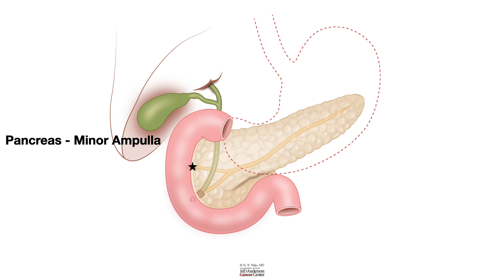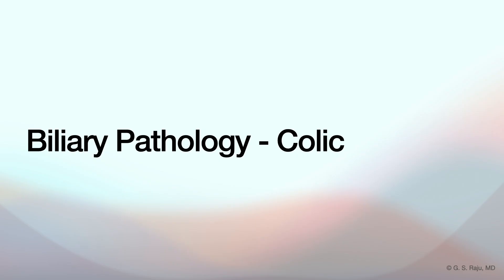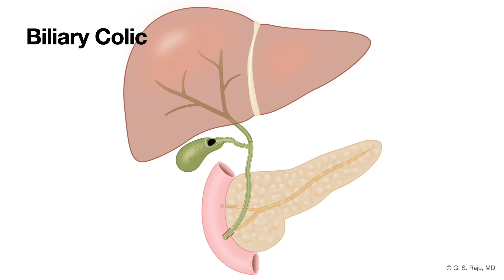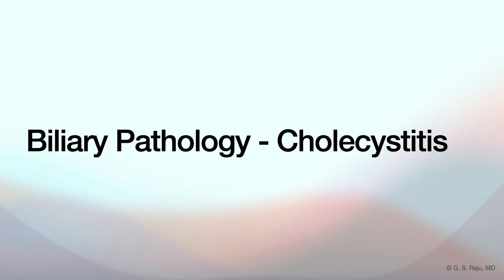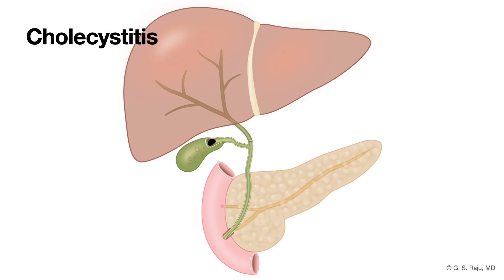Now let's talk about common biliary problems seen during ERCP. Biliary colic is usually a gallstone causing a temporary blockage of the cystic duct. If the stone just sits in the gallbladder, often no symptoms — but if it moves into the cystic duct and blocks it, even for a short while, that causes characteristic pain. The key word is transient — the blockage clears itself. That's why typically you don't see inflammation, fever, or jaundice with simple biliary colic. Just pain that comes and goes.